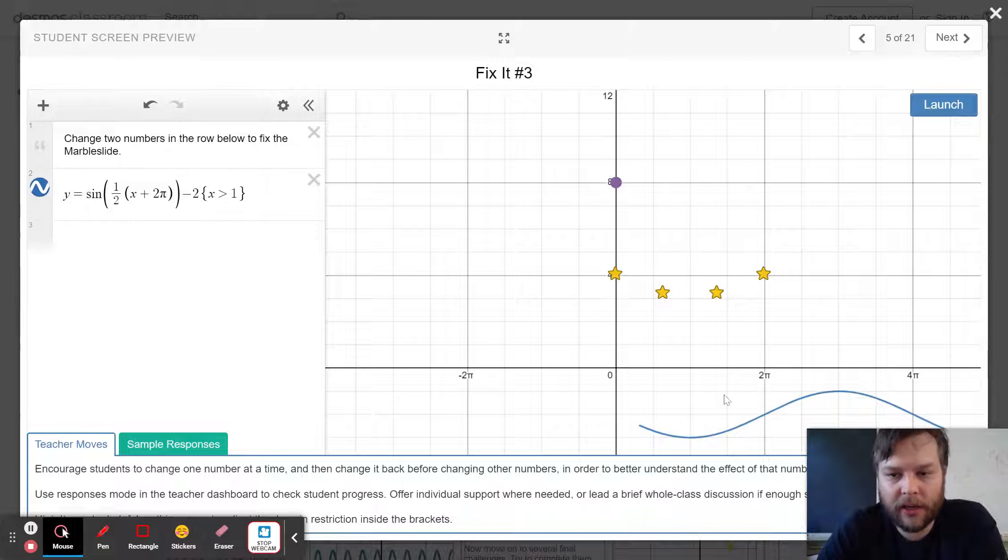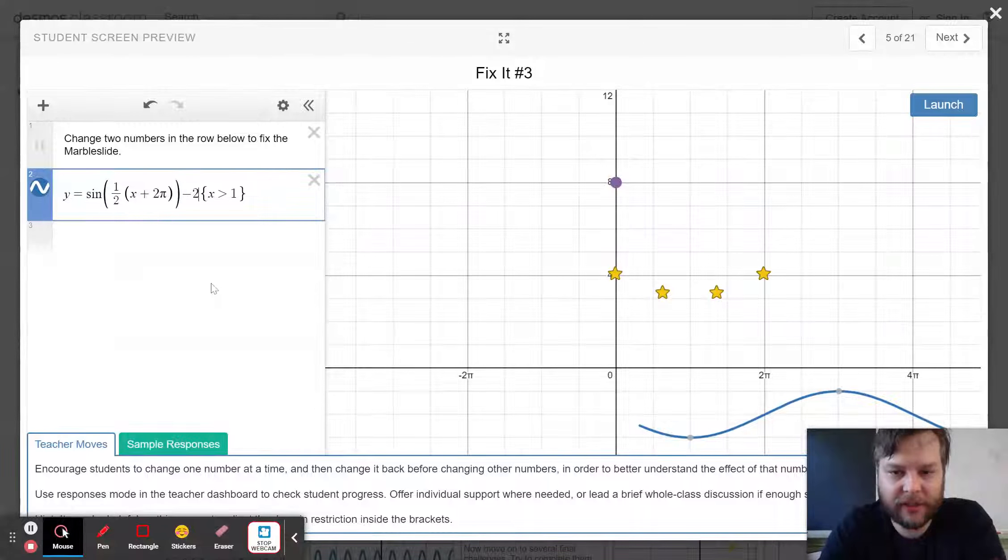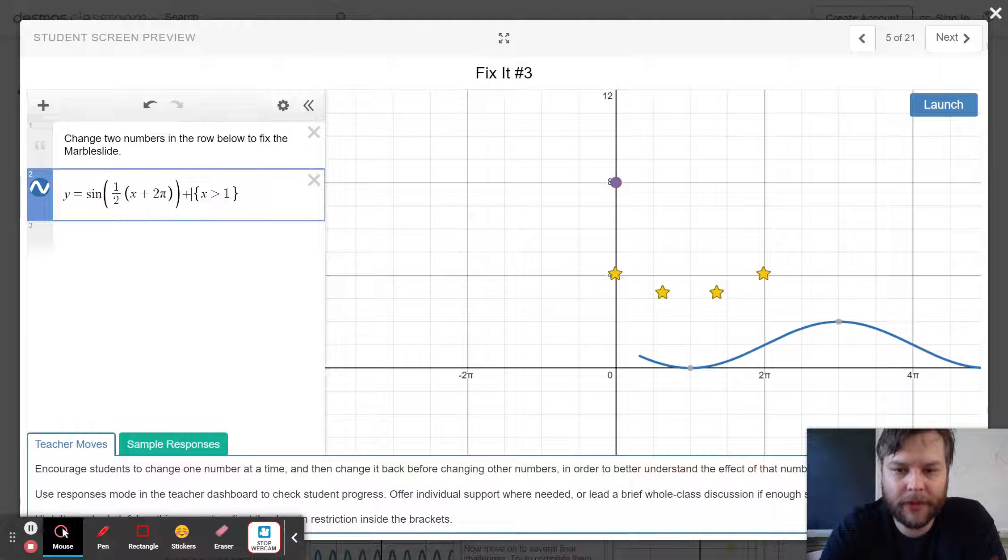Here, I can tell my function is too low. The midline is down here at negative 2. So I'm going to move the midline up to positive 3, maybe positive 4.